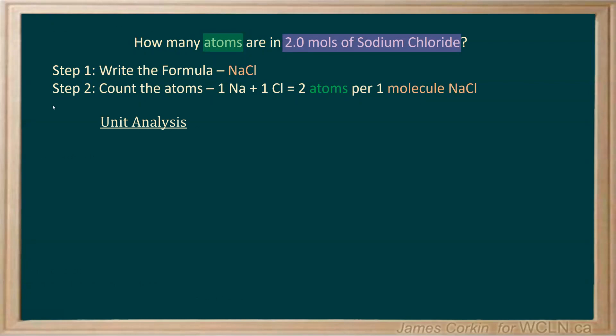Alright, let's use unit analysis and do our conversion. Start with the number we're given, 2.0 moles of sodium chloride. We're going to use Avogadro's number. But we can't go directly to atoms. We need to use the intermediary step of going to the molecules of sodium chloride. There are 6.02 times 10 to the power of 23 molecules of sodium chloride for every 1 mole of sodium chloride.